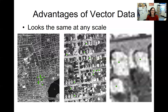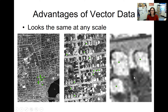Some advantages of vector data relative to raster data: vector features are going to look the same no matter what zoom level you're at. Your points will look like whatever symbology you've chosen — green circle things in this case — at any zoom level. Raster data do not behave the same way; as you zoom in further and further, you get a pixelation effect where you start seeing those little square pixels that make up raster data. So looking the same regardless of zoom is an advantage of vector data.